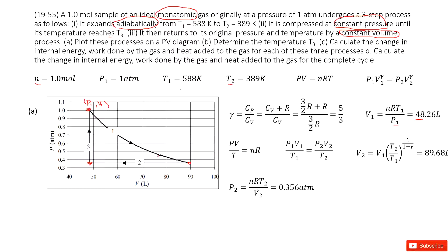Next, if we want to plot this curve, we need to find P2 and V2. Using the ideal gas law, PV equals nRT, we can write it as PV over T equals nR, which is constant. So the initial state gives P1*V1 over T1 equals P2*V2 over T2.